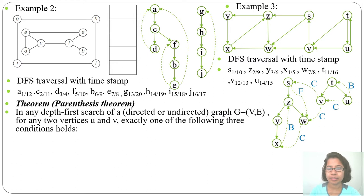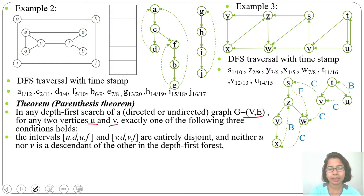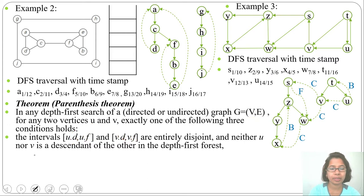In any depth first search of a directed or undirected graph G = (V, E), where V is vertices and E is edges, for any two vertices U and V, exactly one of the following three conditions holds. First condition: the interval [U.D, U.F] — where D is discovery time and F is finishing time — and [V.D, V.F] are entirely disjoint, and neither U nor V is a descendant of the other in the depth first search.